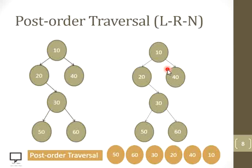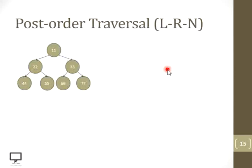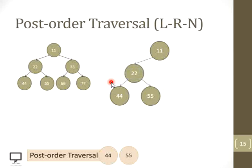Let's move to the next example following the same steps. We start with root node 10 and check for its left child — present, step down to 22. Make 22 the root node and check for its left child — present, step down to 44. For 44, no left child and no right child, so process it. Then move to the right child of 22, which is 55. For 55, no left child and no right child, so process it. Return back to 22 and process it.